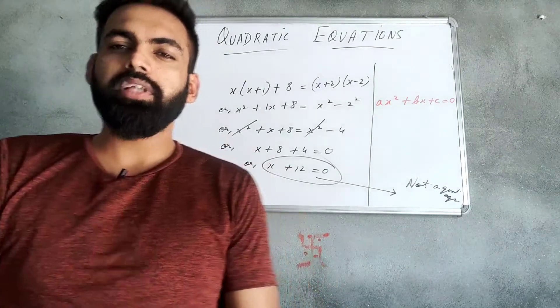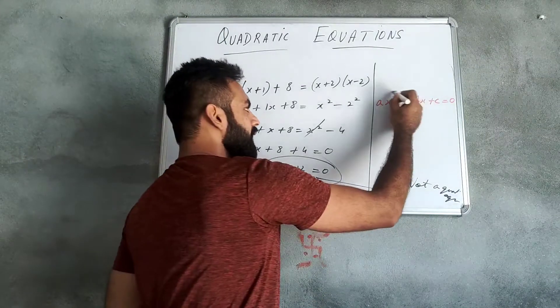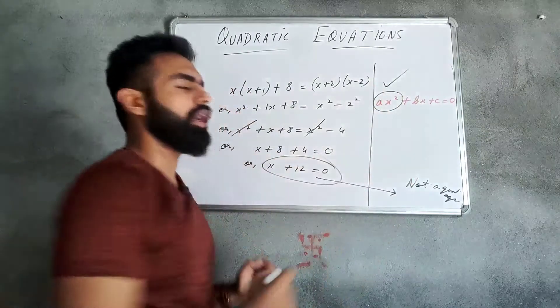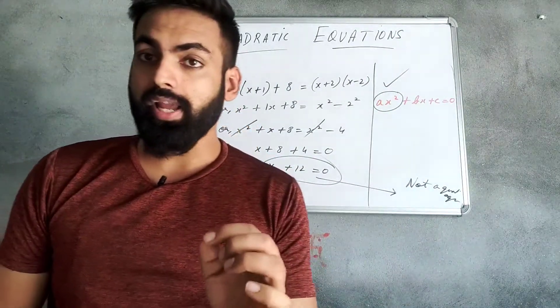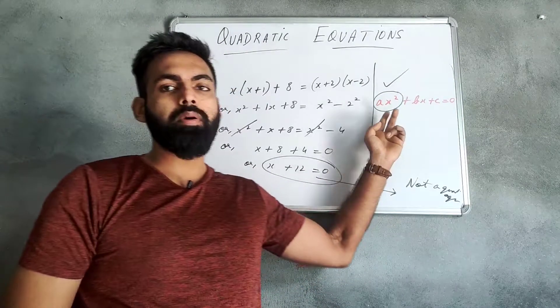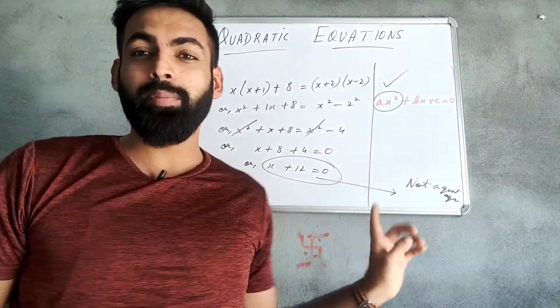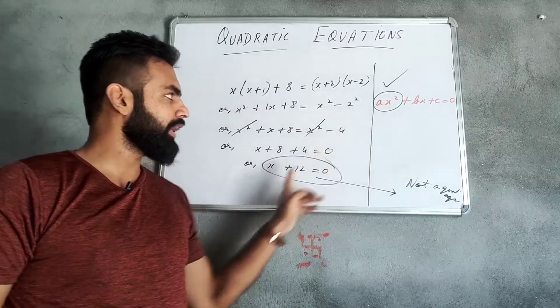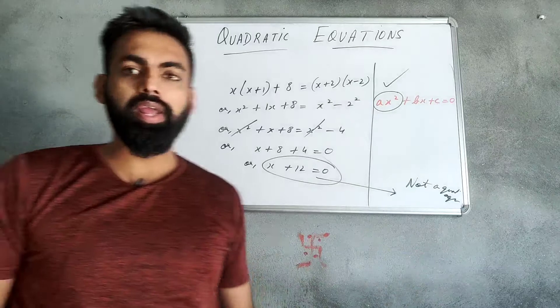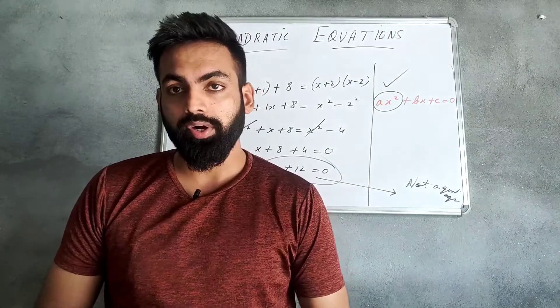So, it is important that this term must be present for a quadratic equation. These two terms can also be absent. But this is a must, meaning the value of a cannot be 0. What does this mean? If a is 0 then this term is absent. Here, a is 0. Therefore, it is not a quadratic equation.